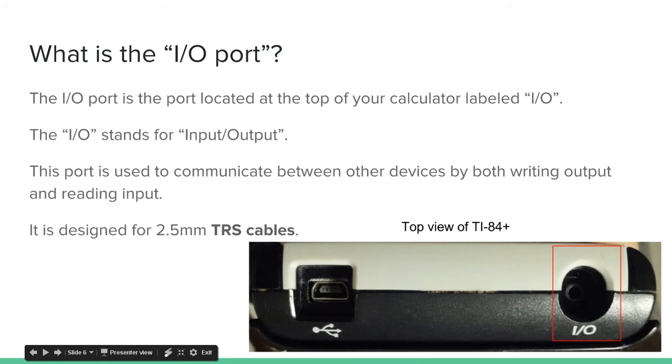So what is the I/O port? The I/O port is the port located at the top of your calculator labeled I/O. This I/O stands for Input Output. The port is used to communicate between other devices by both writing output and reading input. It is designed for 2.5mm TRS cables. Here's the top view of my TI-84+. As you can see, there's a little port here labeled I/O.